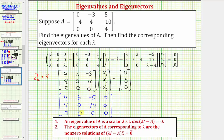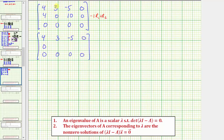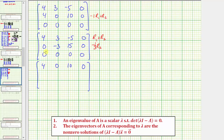Let's write this in reduced row echelon form. We replace row two with negative one times row one plus row two to get a zero in the first position of row two, giving zero, negative three, fifteen, zero. Then we replace row one with row one plus row two to get a zero in the second column of row one, and replace row two with negative one-third times row two to get a leading entry of one. Row two becomes zero, one, negative five, zero.